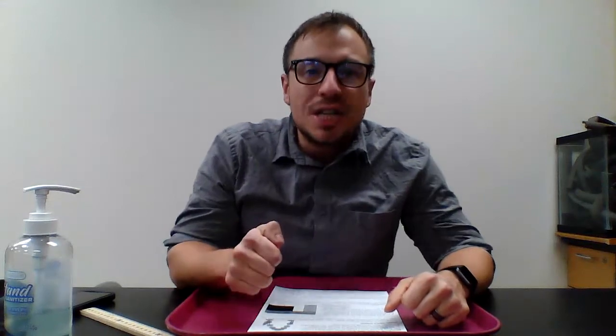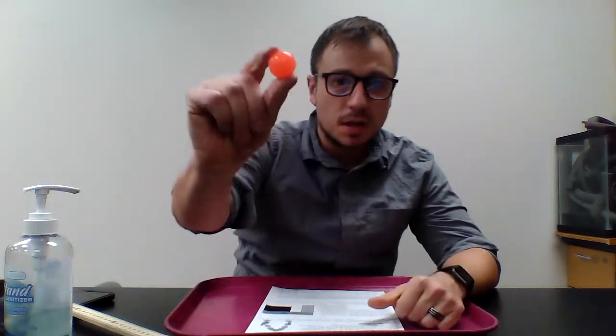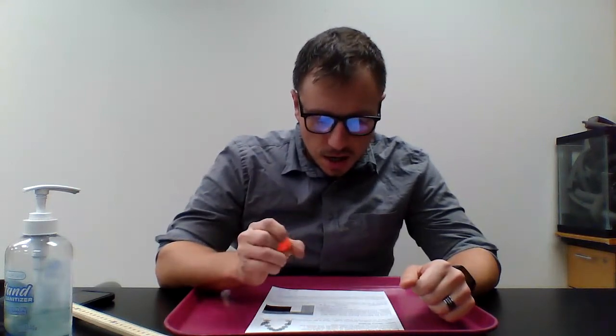In this lab activity you're going to explore projectiles being thrown upward. At each table there will be a ruler like this meter stick and a bouncy ball. Drop the ball from a height of one meter.